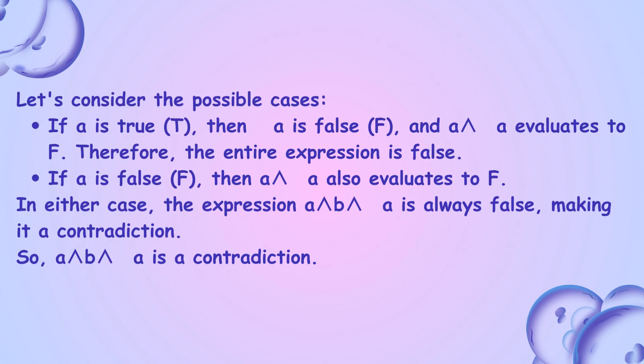Let's consider the possible cases. If A is true (T), then NOT-A is false (F), and A AND NOT-A evaluates to F; therefore the entire expression is false. If A is false (F), then A AND NOT-A also evaluates to F. In either case, the expression ABA is always false, making it a contradiction. So ABA is a contradiction.